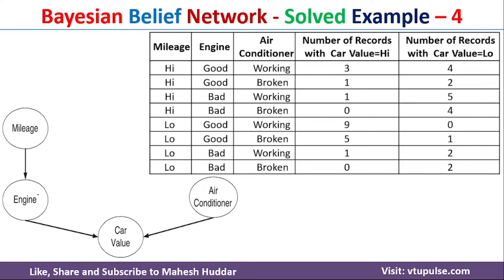But when it comes to engine, the engine depends on the mileage — whether mileage is high or low. So based on the value of mileage, we need to get the probability for engine. The probability of engine depends on mileage. Similarly, the probability of car value depends on both engine as well as air conditioner.